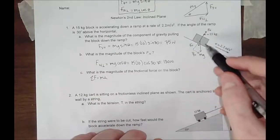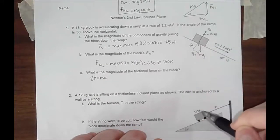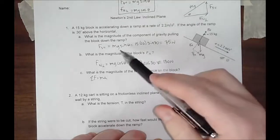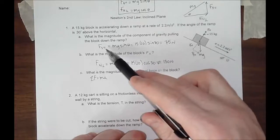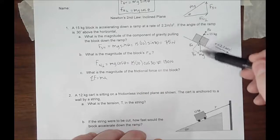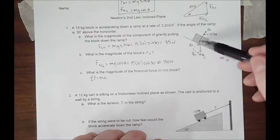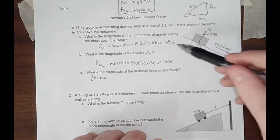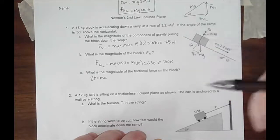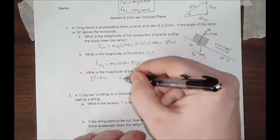What is the only thing pulling this object down the ramp? That is the force of gravity parallel to its motion. Please note, it's not mg. It is this component that we have found right here. That's why it's so important to find these first.